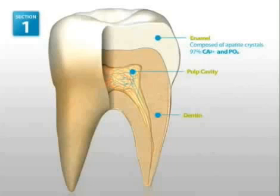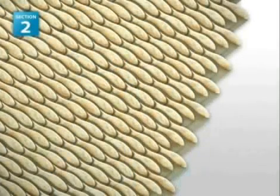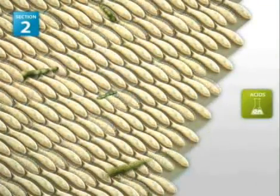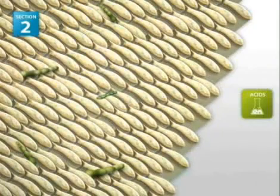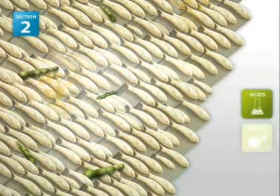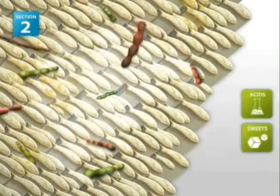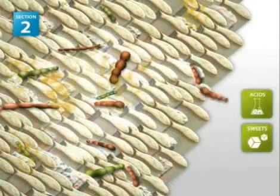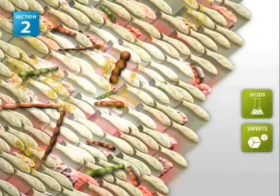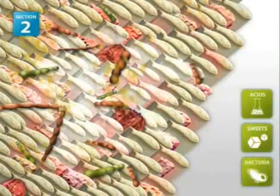Every day, demineralization occurs as a result of consumption of acidic foods or beverages. With a drop in pH below 5.5, hydrogen ions in the acid medium react with apatite crystals, breaking down rings of phosphates and calcium. This results in demineralization and potentially the appearance of white spot caries.